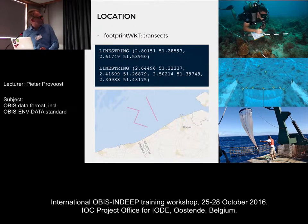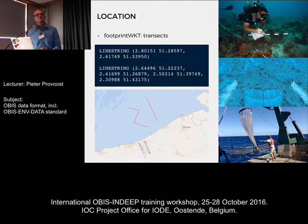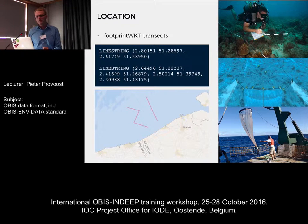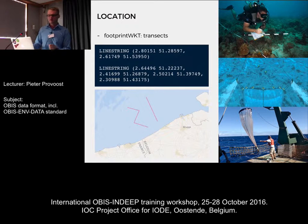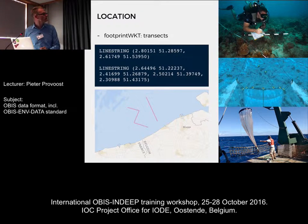Regarding footprint WKT: in many cases you don't just have point coordinates for your occurrence. For example, if you have line transects, bottom trawls, and so on, you won't have a point coordinate but you will have a transect. To add these to your records you can use WKT strings. WKT stands for well-known text.